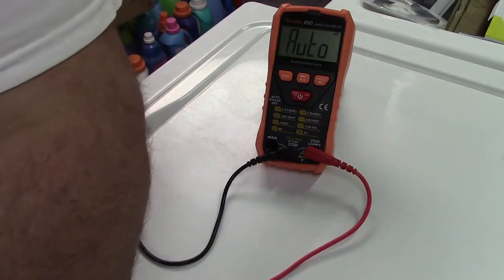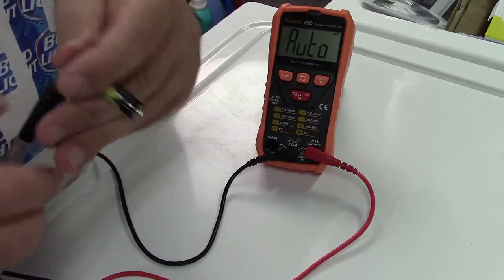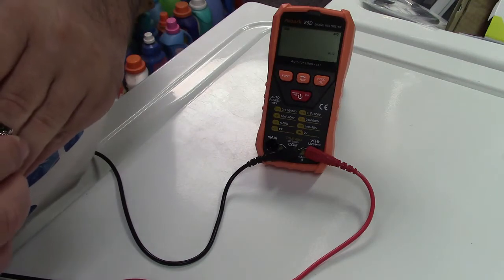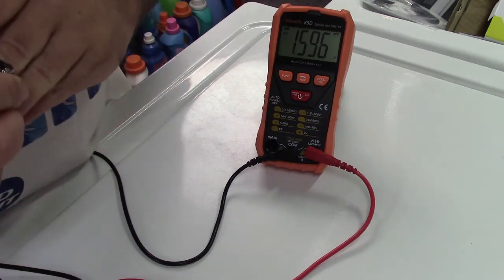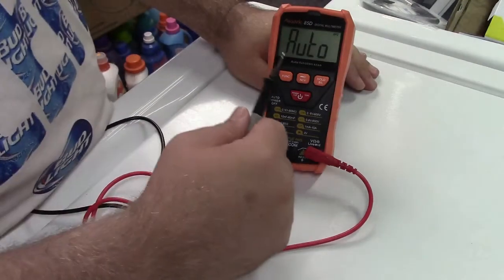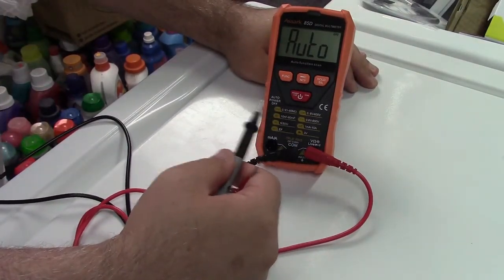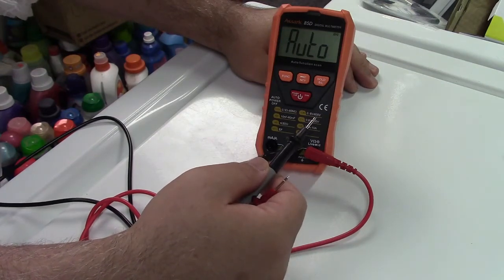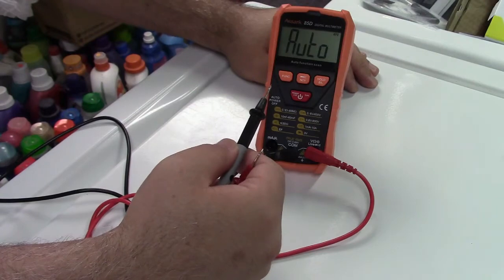And here's a triple A battery right here. 1.595. So that all works fine. So this automatically sensed that we were trying to measure DC volts and switched accordingly. In fact, you heard a relay in here click.